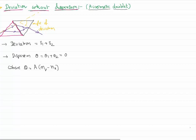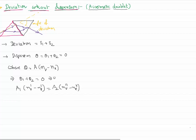Now, as the total dispersion is equal to 0, I can write: dispersion in the first prism plus dispersion in the second prism equals 0. Dispersion in the first prism is A1 times (n_violet minus n_red) for the first prism, and this equals A2 times (n_violet minus n_red) for the second prism. From here, angular dispersion due to the first prism is minus the angular dispersion due to the second prism — giving us a formula like this.